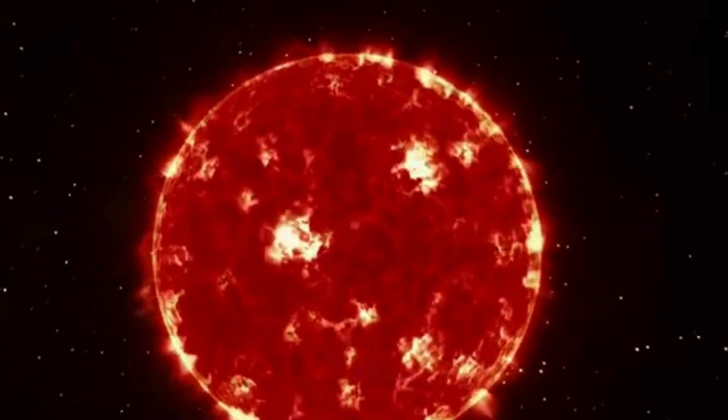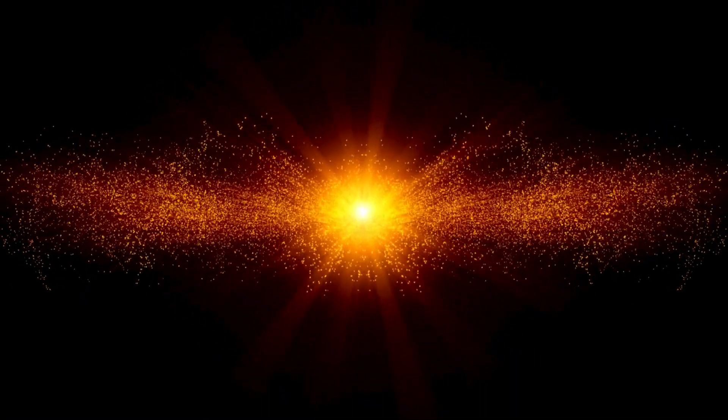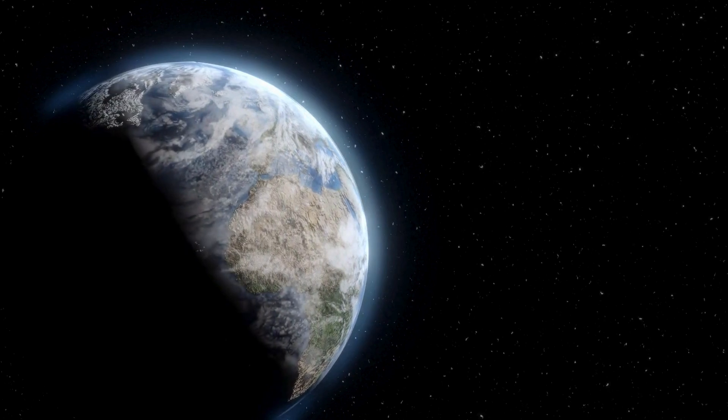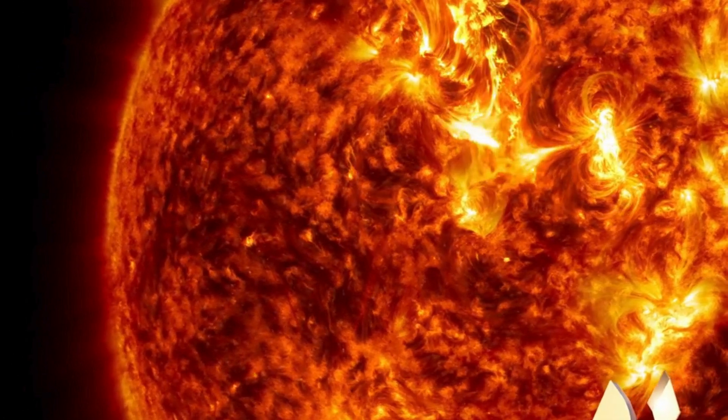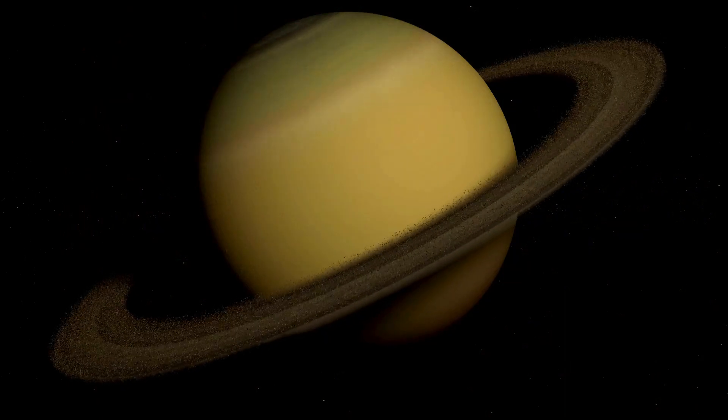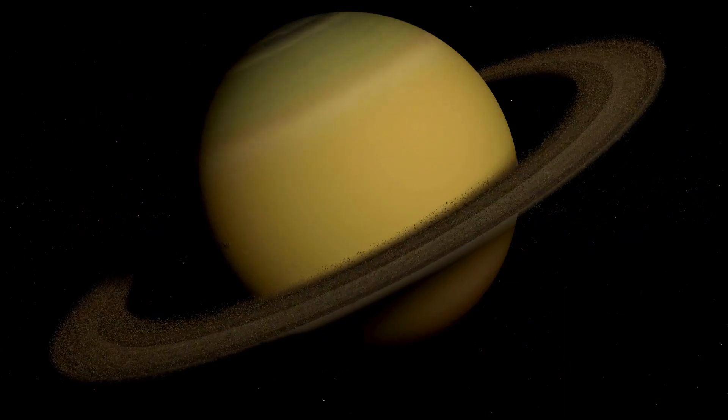When massive stars run out of nuclear fuel in their core, they can no longer hold themselves up against the immense crush of their own gravity, and so suddenly collapse. This creates enormous shockwaves through the star, and the outer layers explode violently outwards.